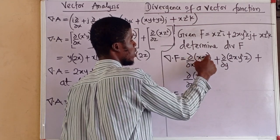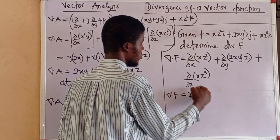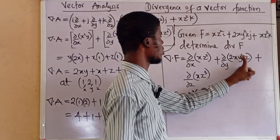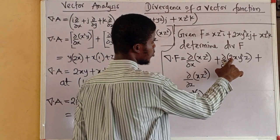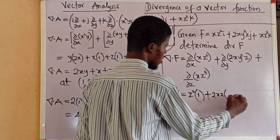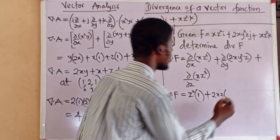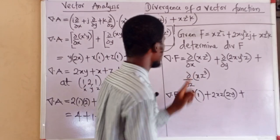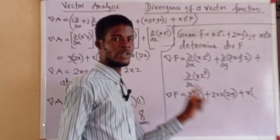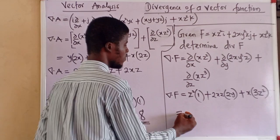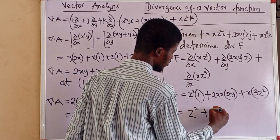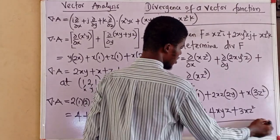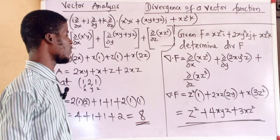The partial derivative of xz² with respect to x keeps z as a constant, so differentiating x gives z². The partial derivative of 2xy²z with respect to y keeps 2xz as a constant, then differentiating y² gives 2y, yielding 4xyz. The partial derivative of xz³ with respect to z keeps x as a constant, differentiating z³ gives 3z², yielding 3xz². So the divergence of F is z² + 4xyz + 3xz², a scalar function of x, y, and z.